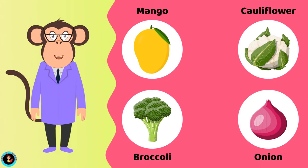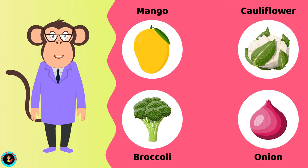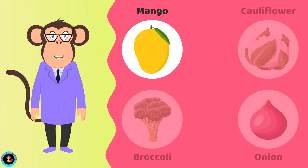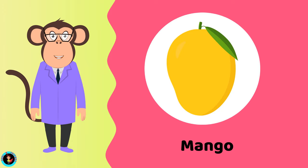Which among these is a fruit? Mango. Cauliflower. Broccoli. Onion. The right answer is Mango. Mango is a fruit.